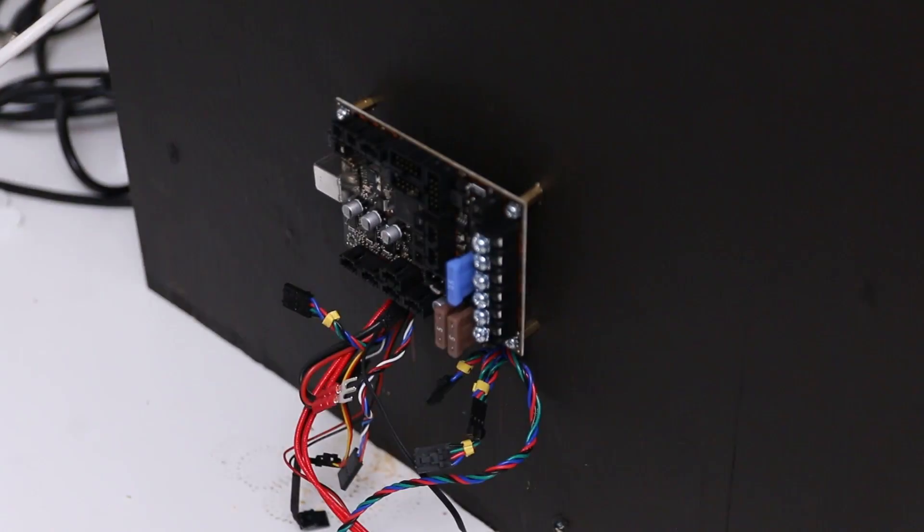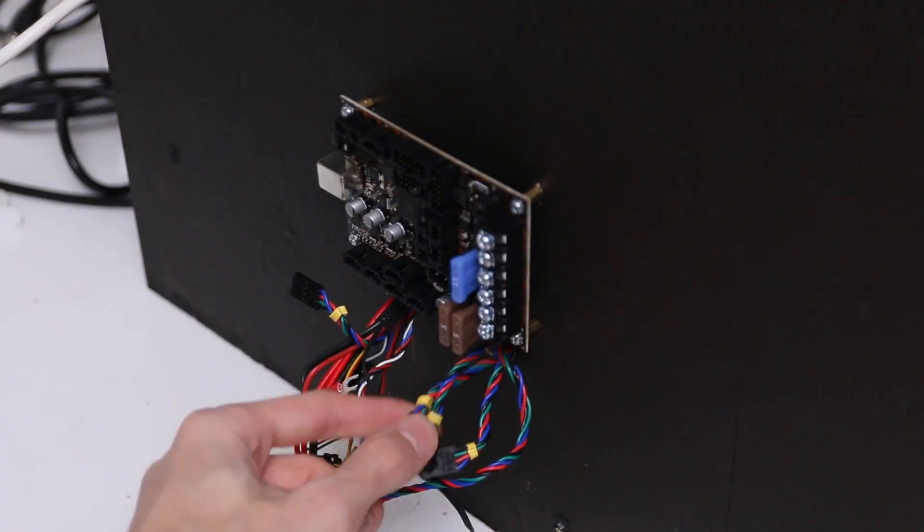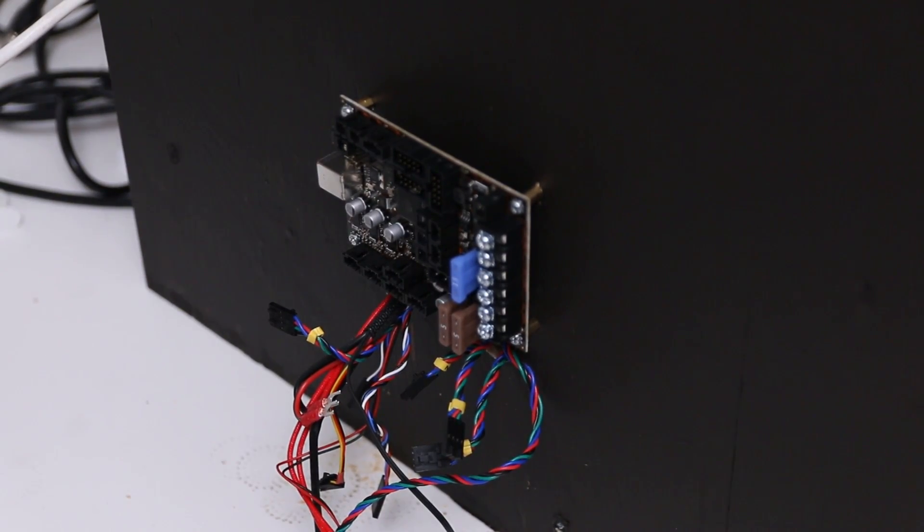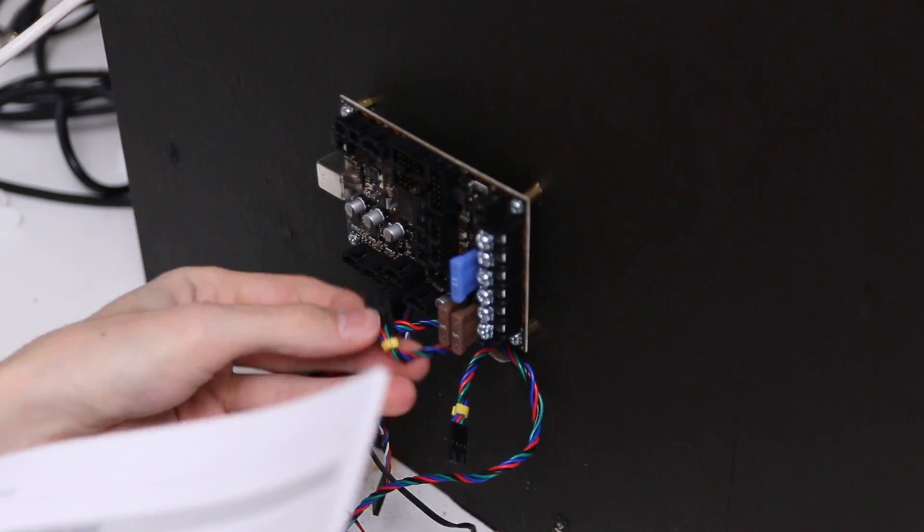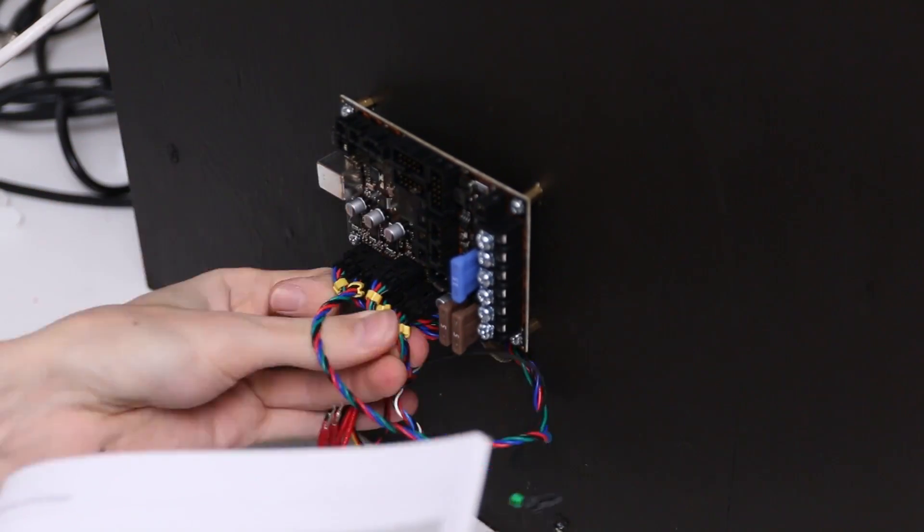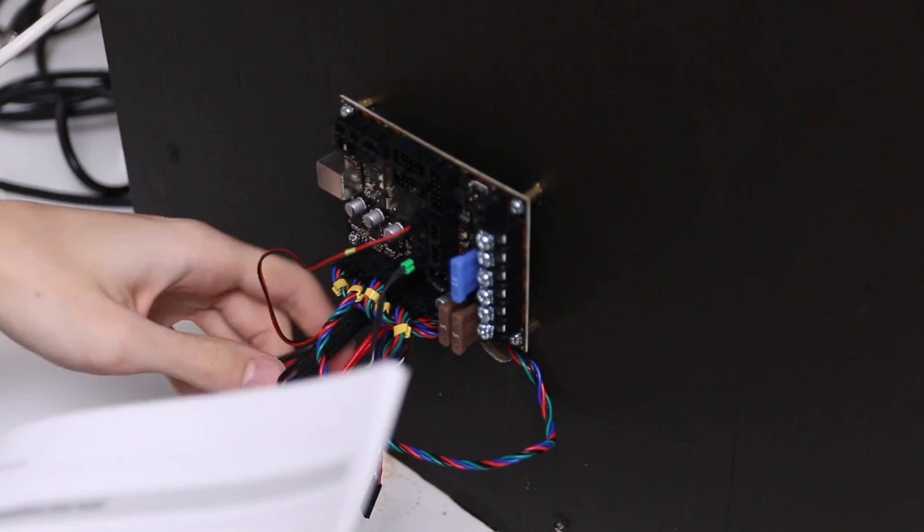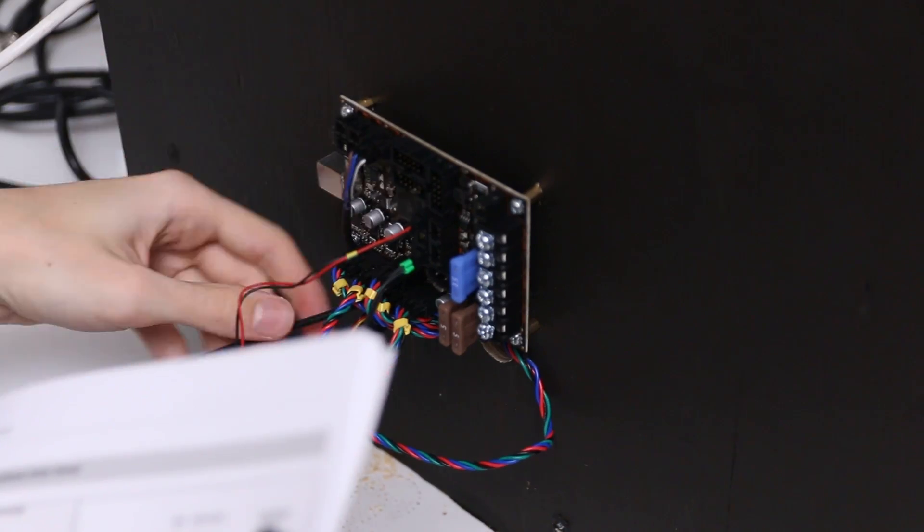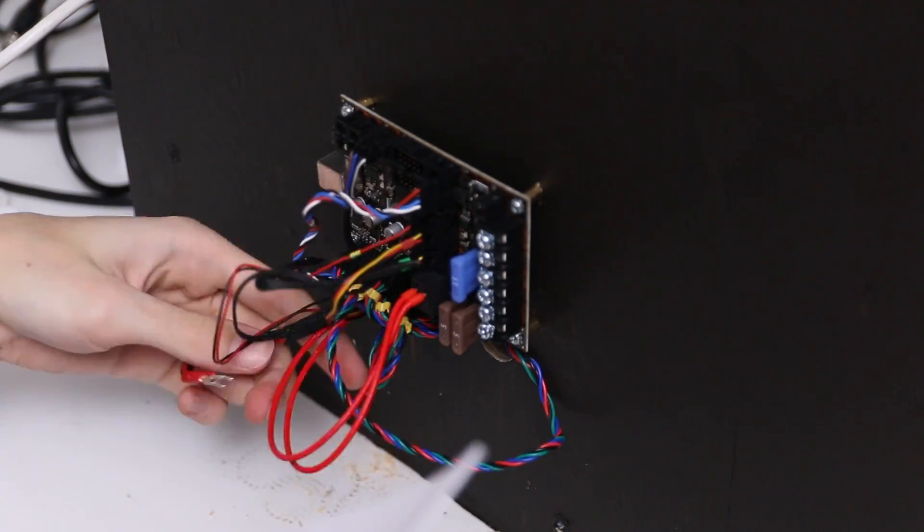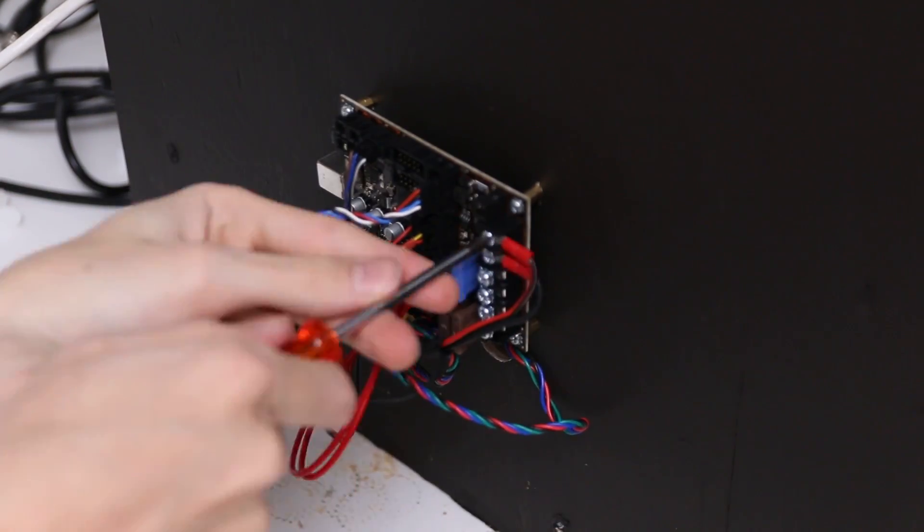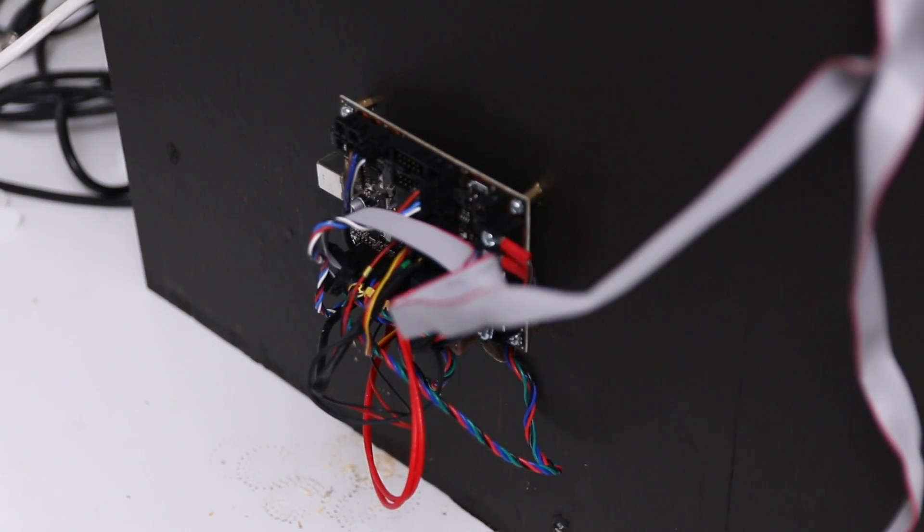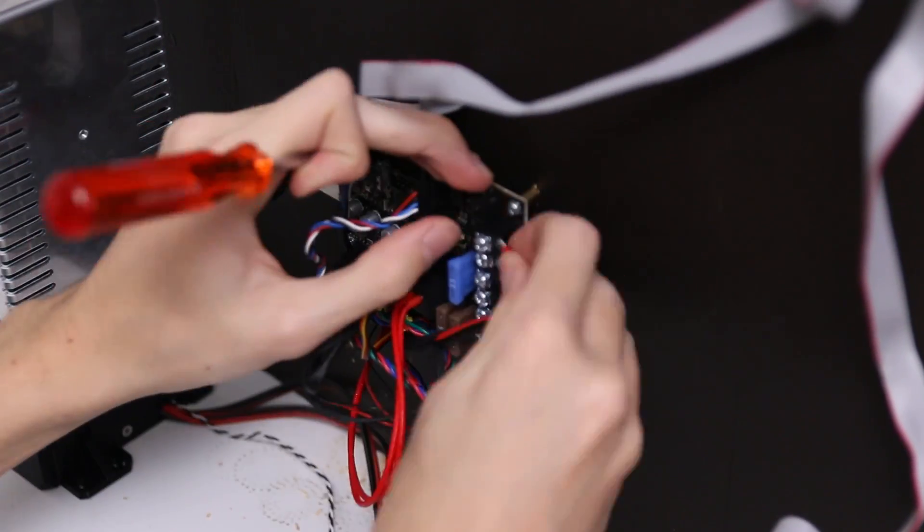And since I moved the electronics just barely outside the box, like right on the other side where they were before, I only had to make one single cable longer. The cable for the heated bed didn't quite reach. But all the other cables, they were just barely long enough. So I didn't have to extend any of them, which was really nice, since that would have been a major pain in the world.